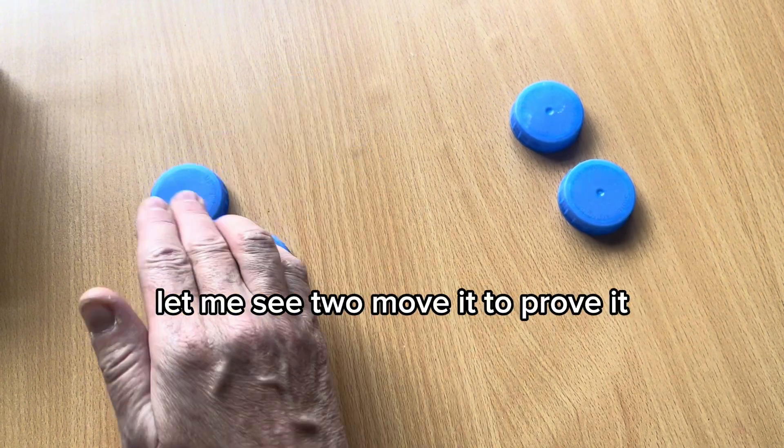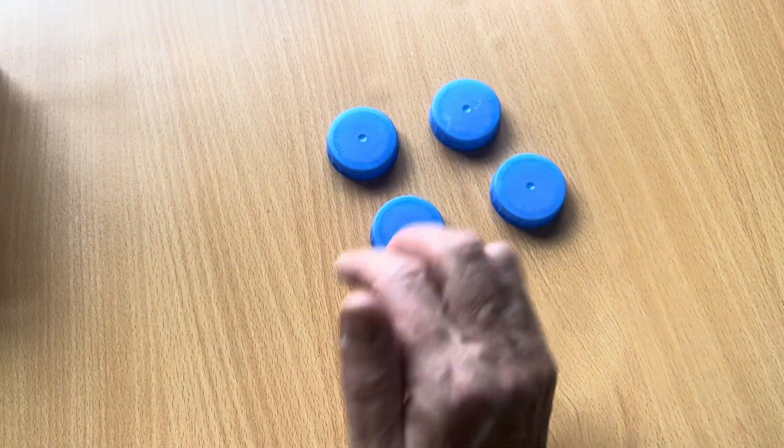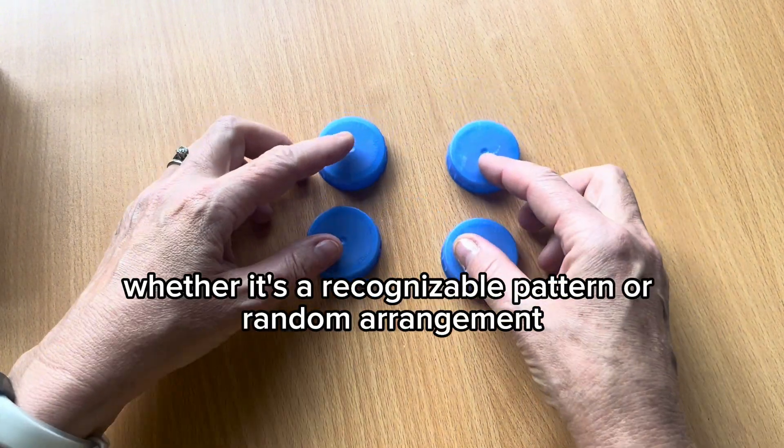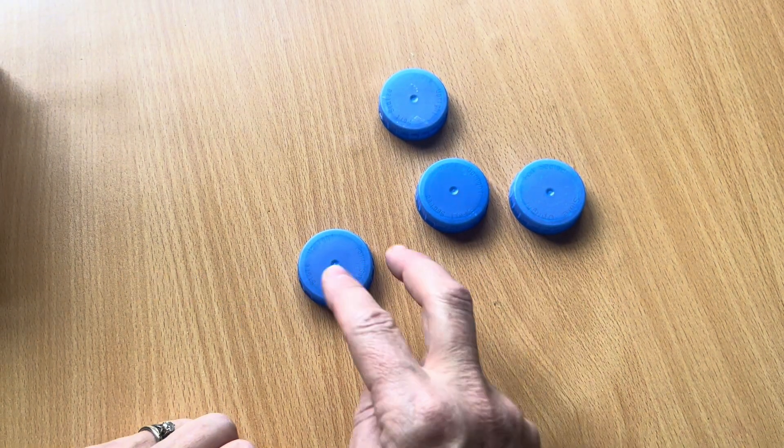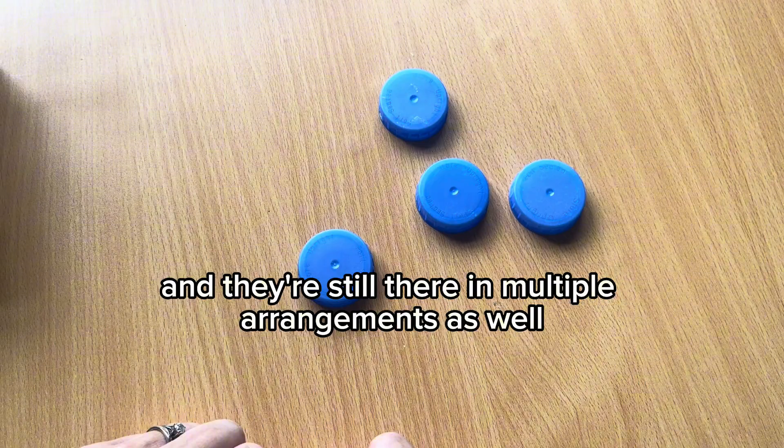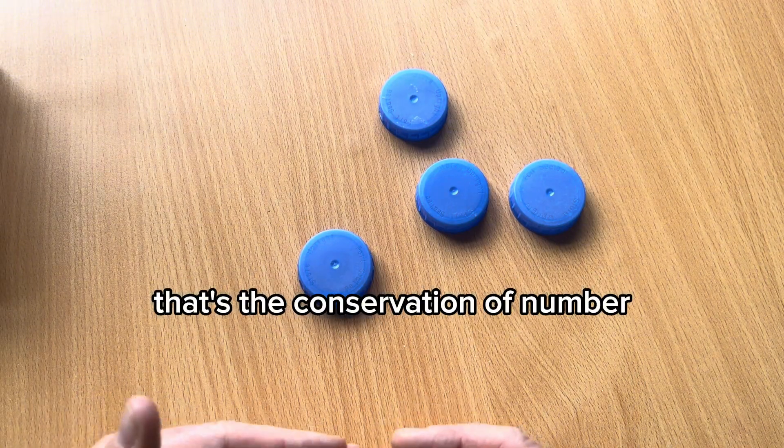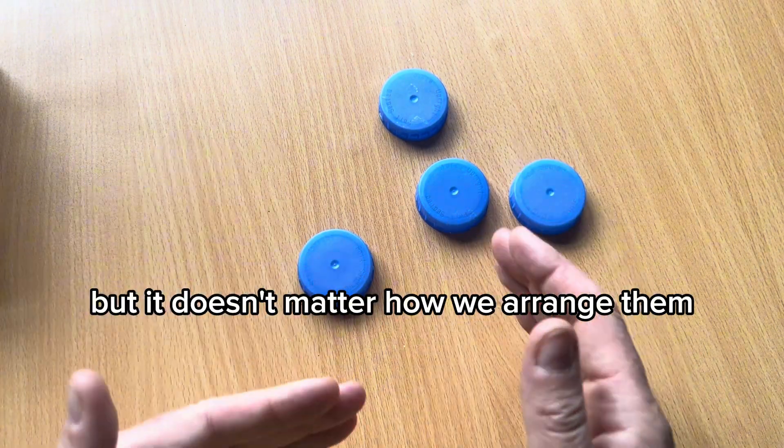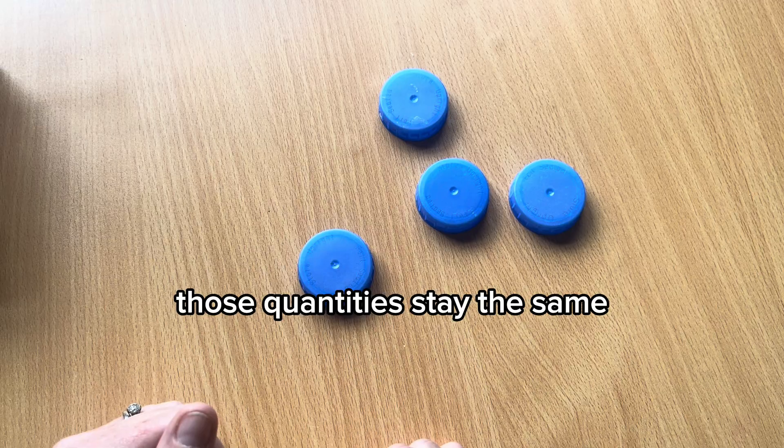What else can you see? I can see two. I can see two. Move it to prove it. When it's back being four, whether it's a recognisable pattern or a random arrangement, those two twos are still there. And they're still there in multiple arrangements as well. That's the conservation of number. It doesn't matter how we arrange them. Those quantities stay the same.